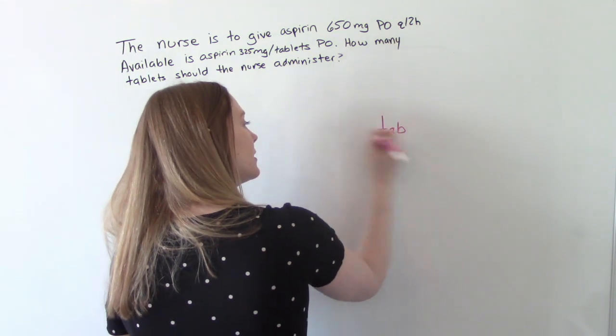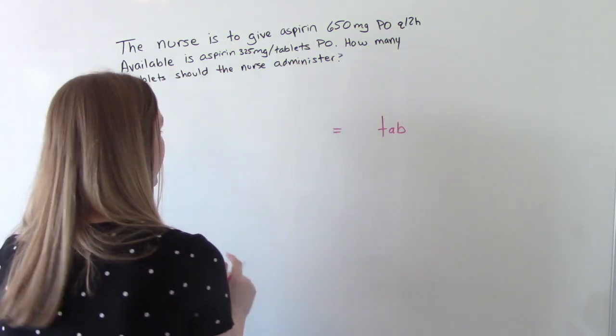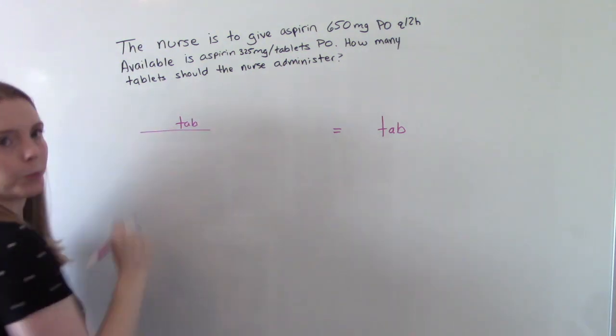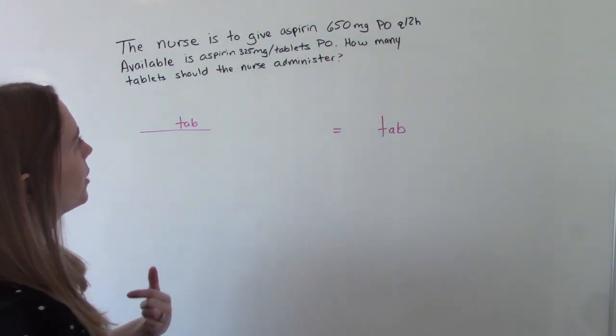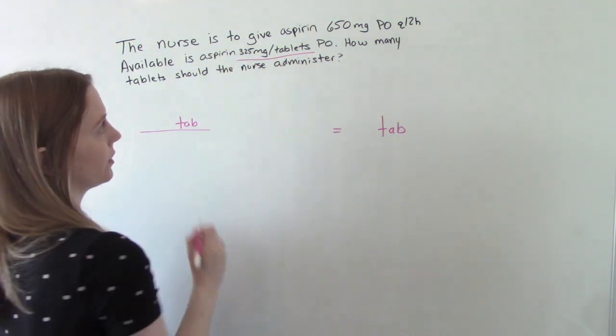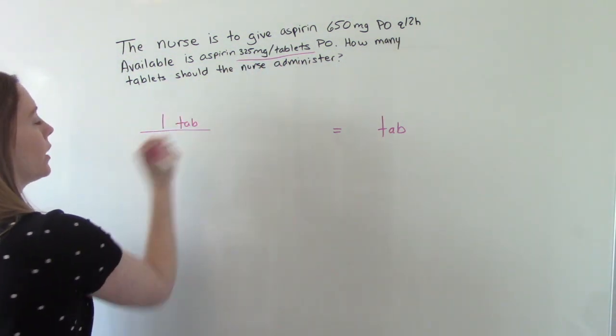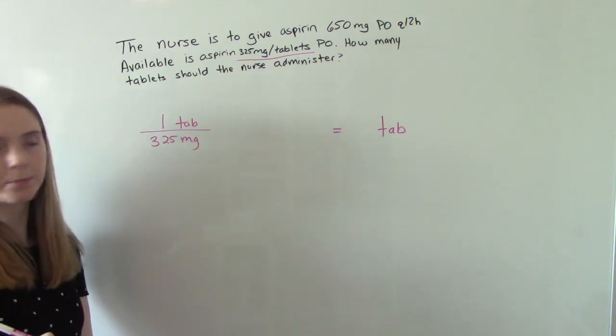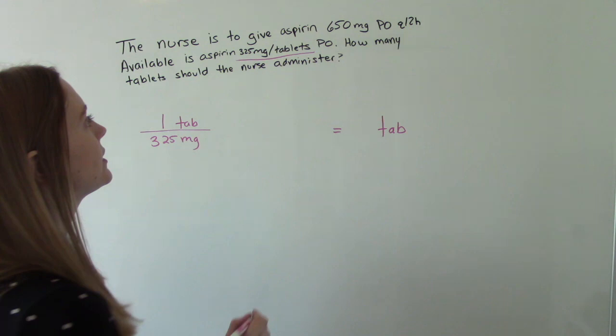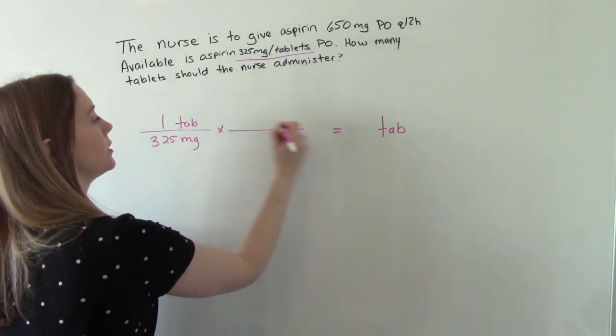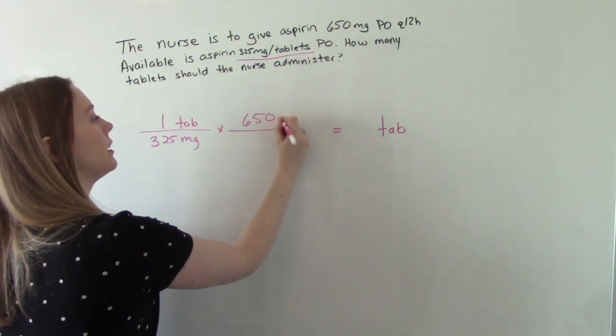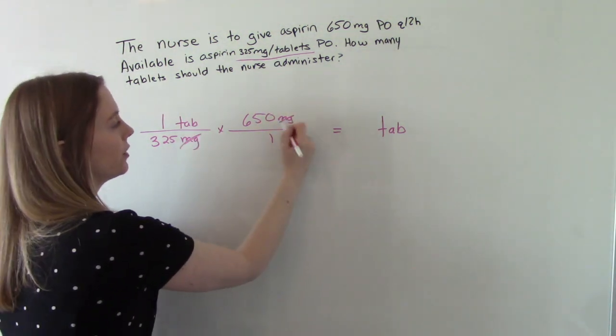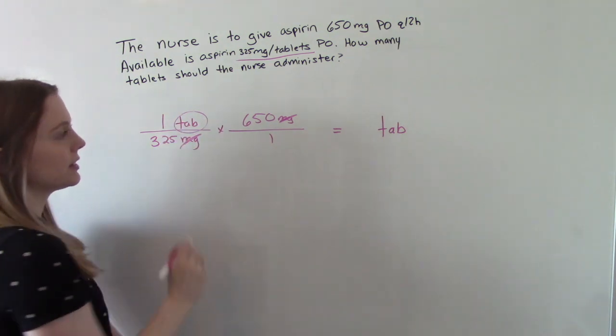So we're looking for tablets. So tablets here in our answer, and if it's in our answer, it has to go in our numerator. Where do we see it here in the problem? Here. So this is telling us one tablet is the same as 325 milligrams. And we want to give 650 milligrams. So 650 over 1. And then our milligrams will cancel, which will leave us with just tablets.